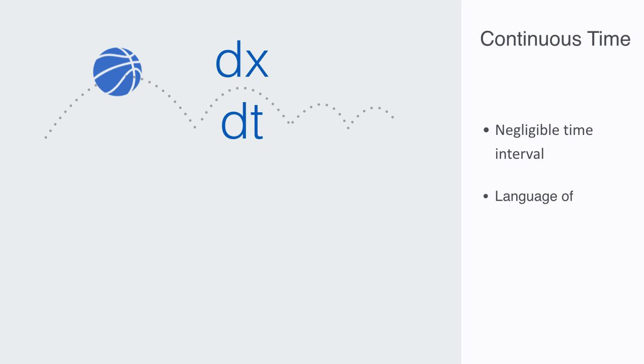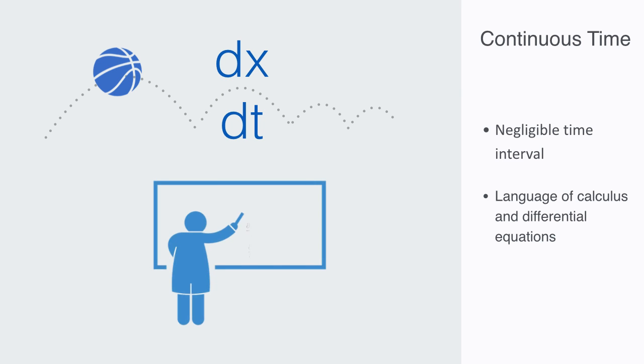Calculus and differential equations have formed a key part of the language of modern science since the day of Newton and Leibniz. Differential equations are great when we're dealing with quite few elements. They give us lots of information, but they also become very complicated very quickly.